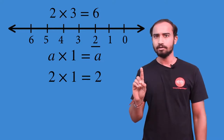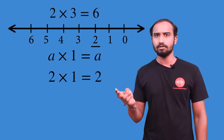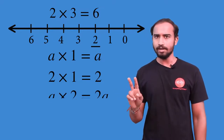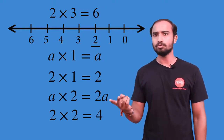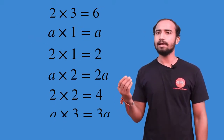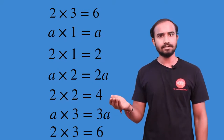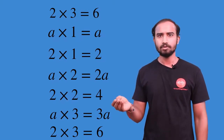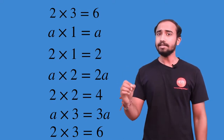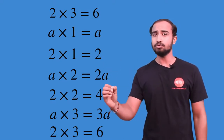If you multiply any number one time, it will give us that same number. If we multiply by two times, it will give us twice that number. And if we multiply three times, it's going to give us thrice that number. These are iterations — how many times you have to jump and how far you have to jump.